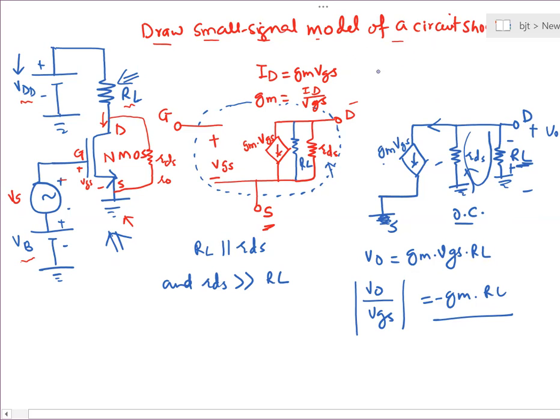So this is how you can draw the small signal model of the circuit given and you can derive the expression of the voltage gain.